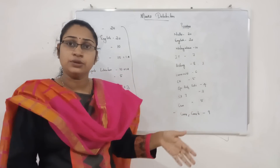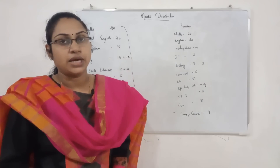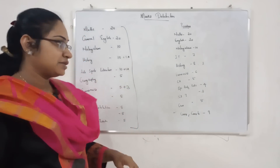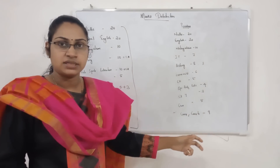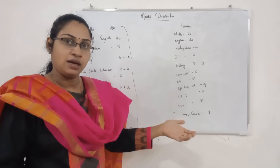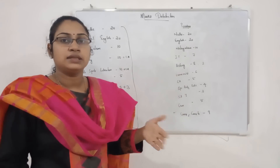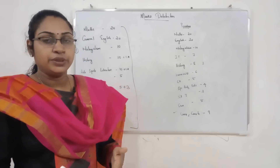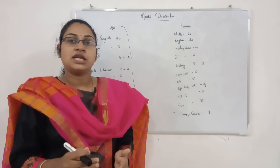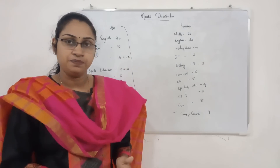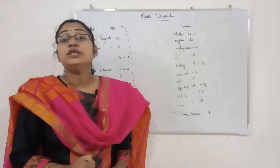This is a mark distribution shown in the Kanya Rasha Prelims. Computer science is a good subject. That's why we try to get a little bit of a mark distribution. You can get a little bit of a mark distribution — how do you think about this?